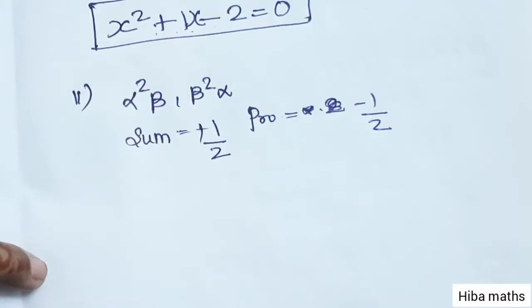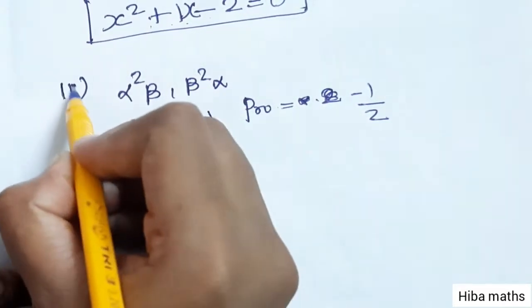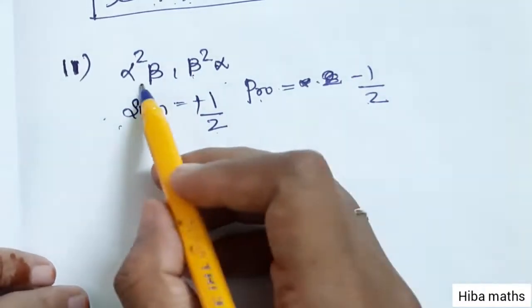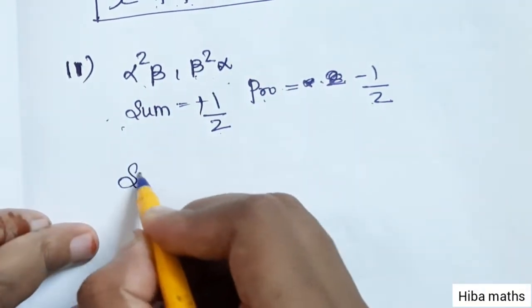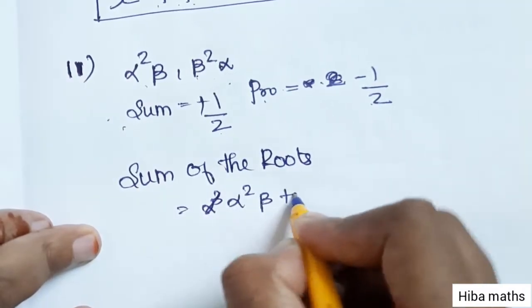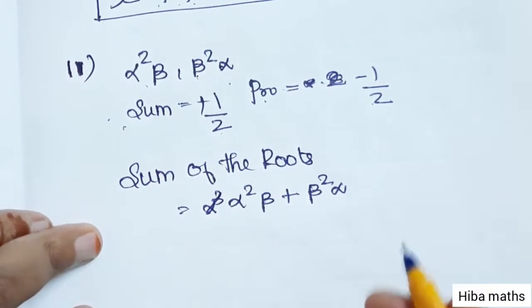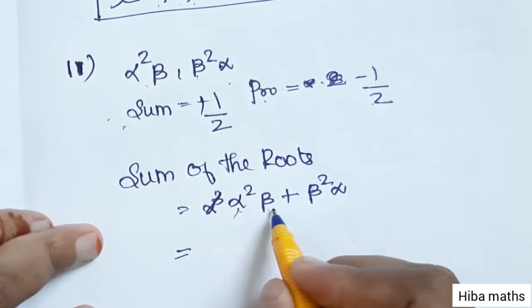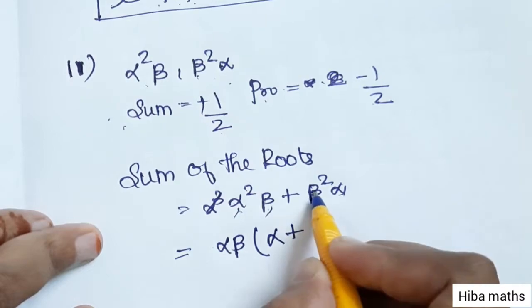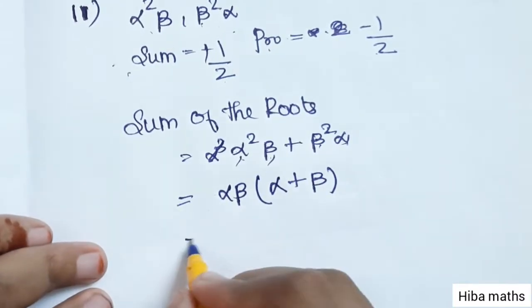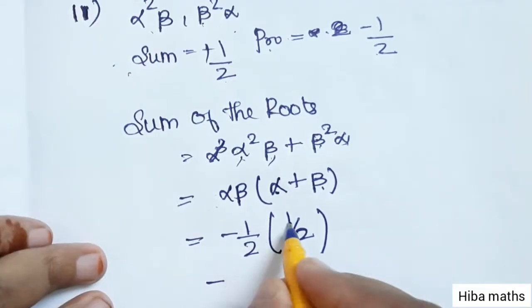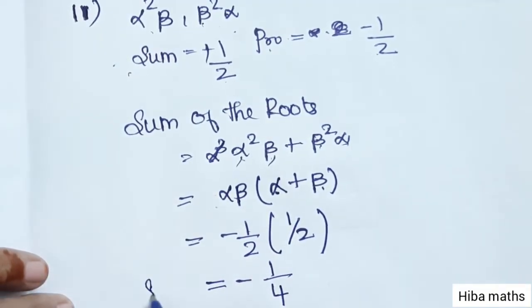For the second subdivision, roots are α²β and β²α. Using alpha + beta = 1/2 and alpha × beta = -1/2. Sum of roots = α²β + β²α = αβ(α + β) = (-1/2)(1/2) = -1/4. This is the sum.